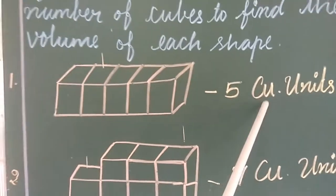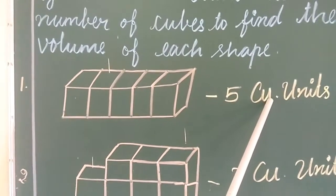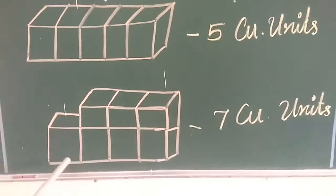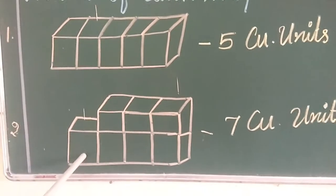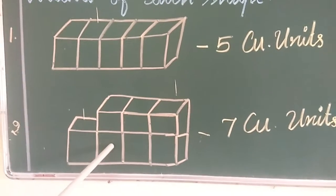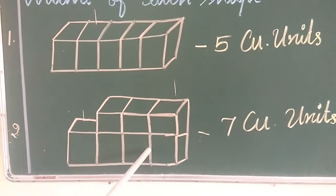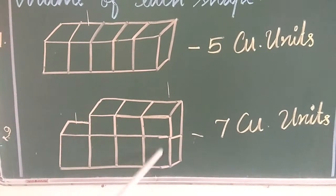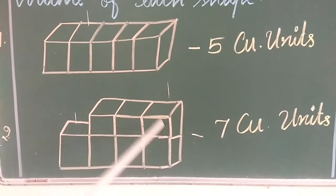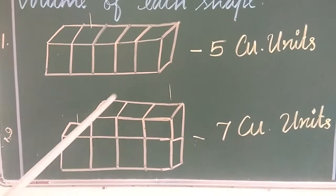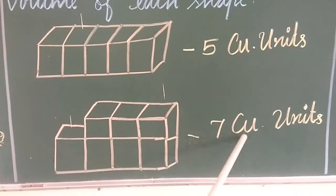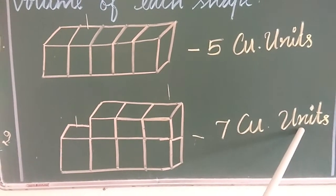Cubic is short for 'cu'. Let's see the second one. Let's count: 1, 2, 3, 4, 5, 6, 7. So, 7 cubic units.